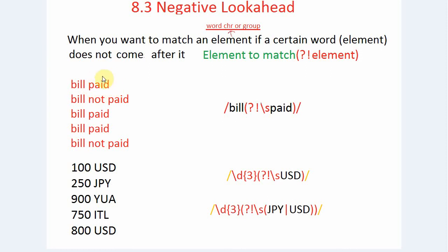In this example, suppose you want to match 'bill' if it is not followed by 'paid'. You want to match 'bill' if 'paid' does not come after it. The syntax will be: bill, then parenthesis, question mark, exclamation mark — negative lookahead — backslash s for space, and then the word 'paid'.